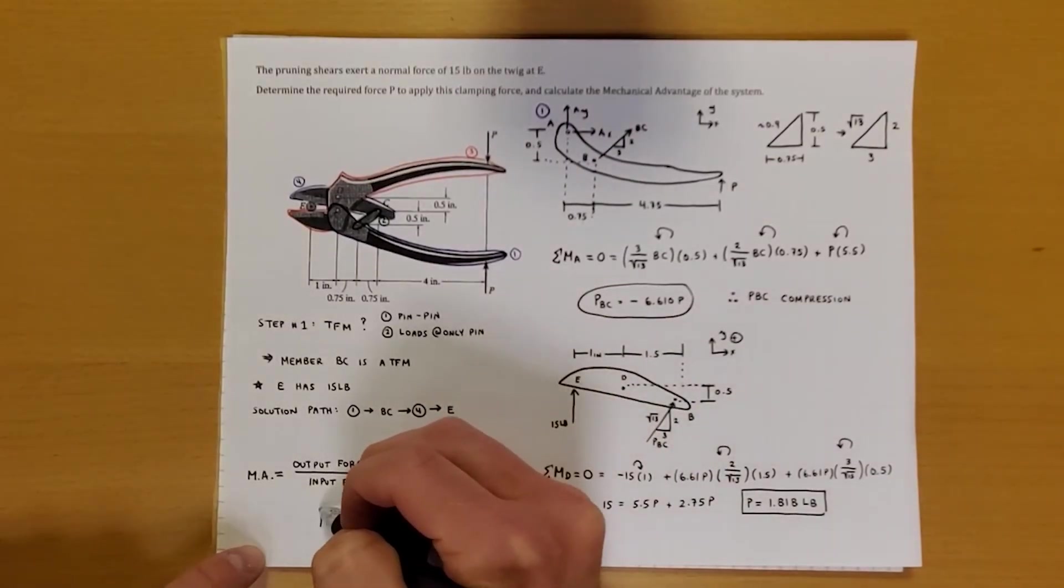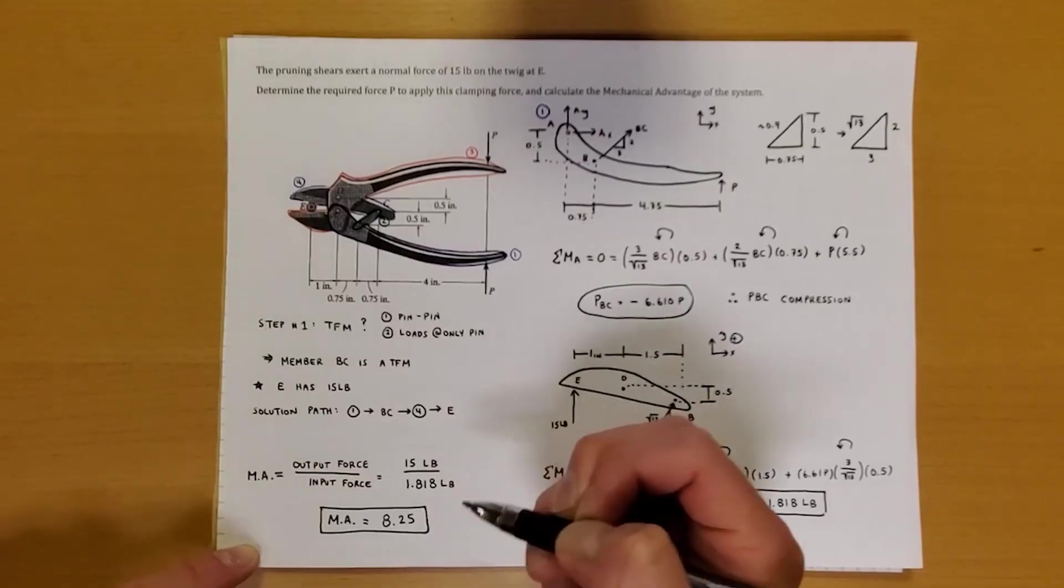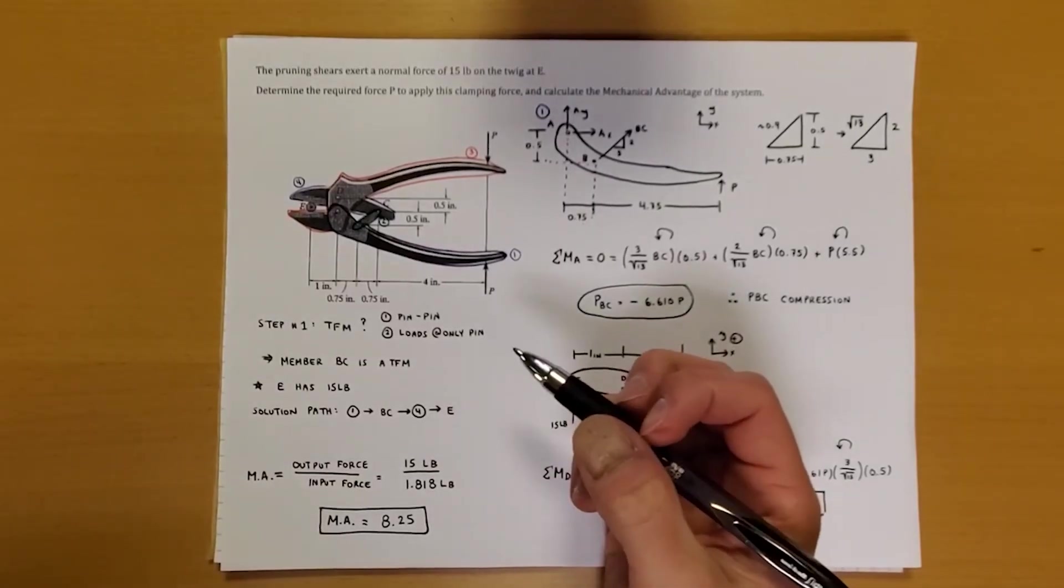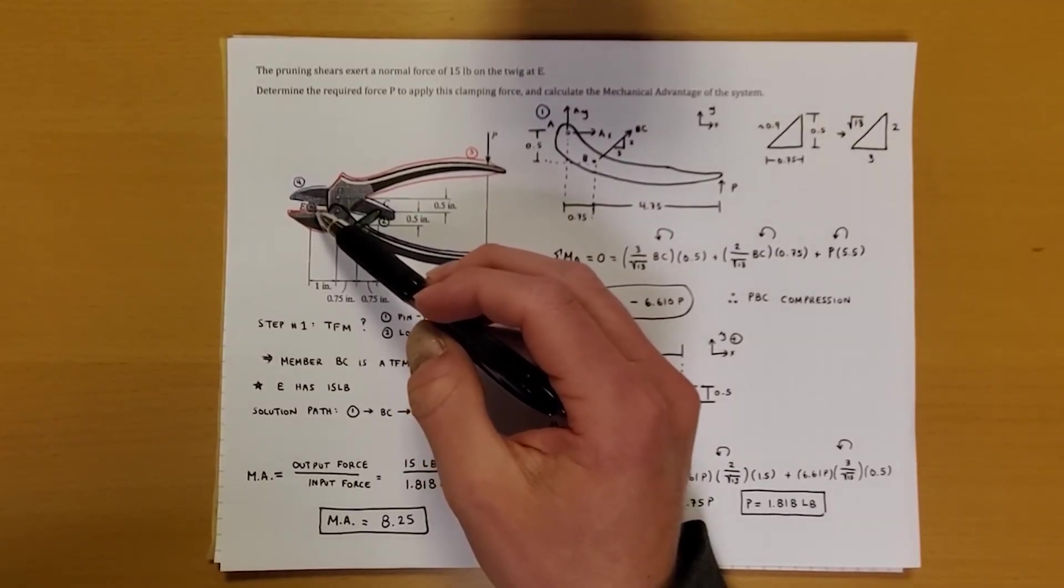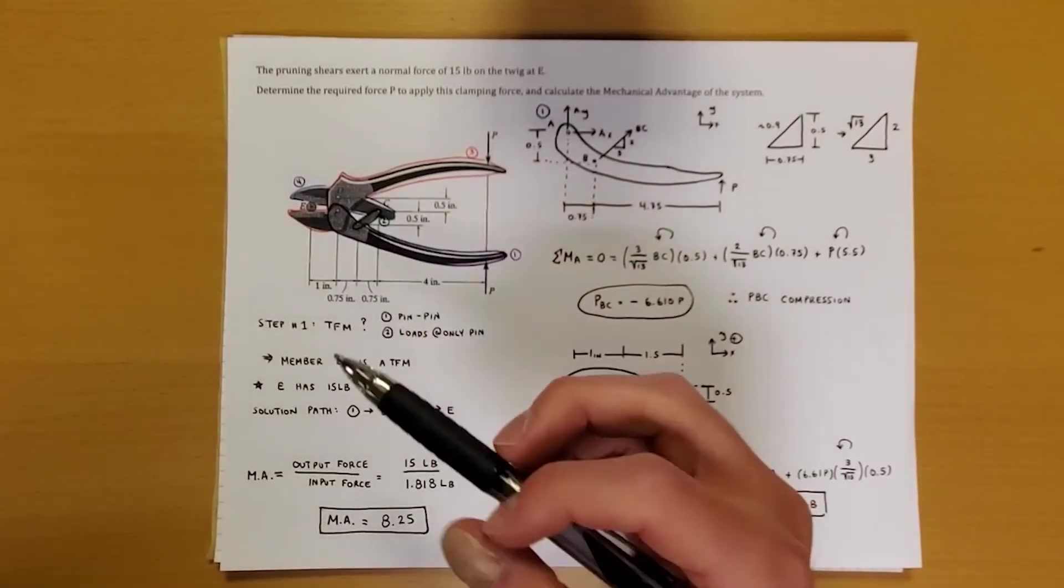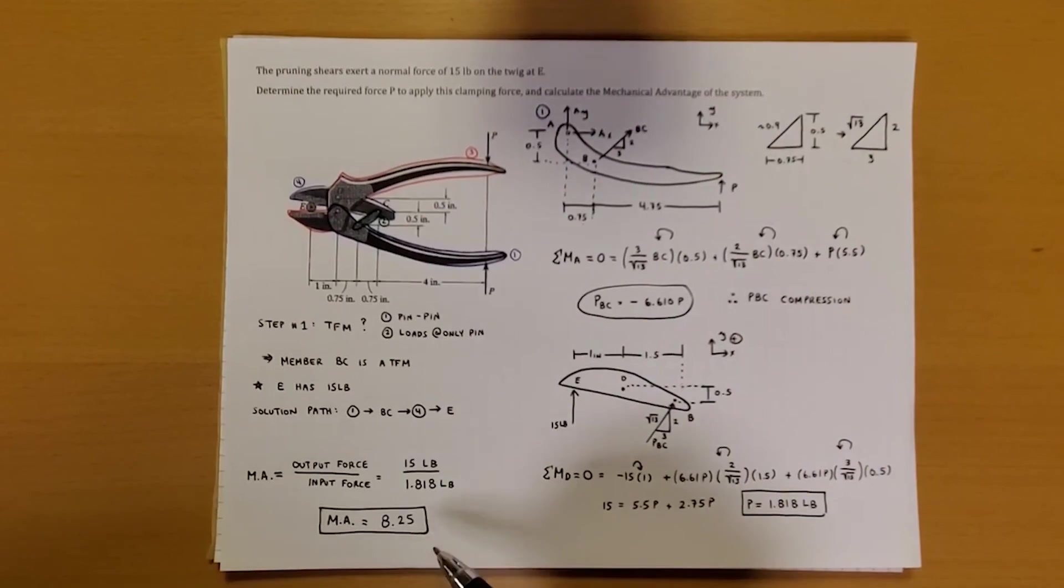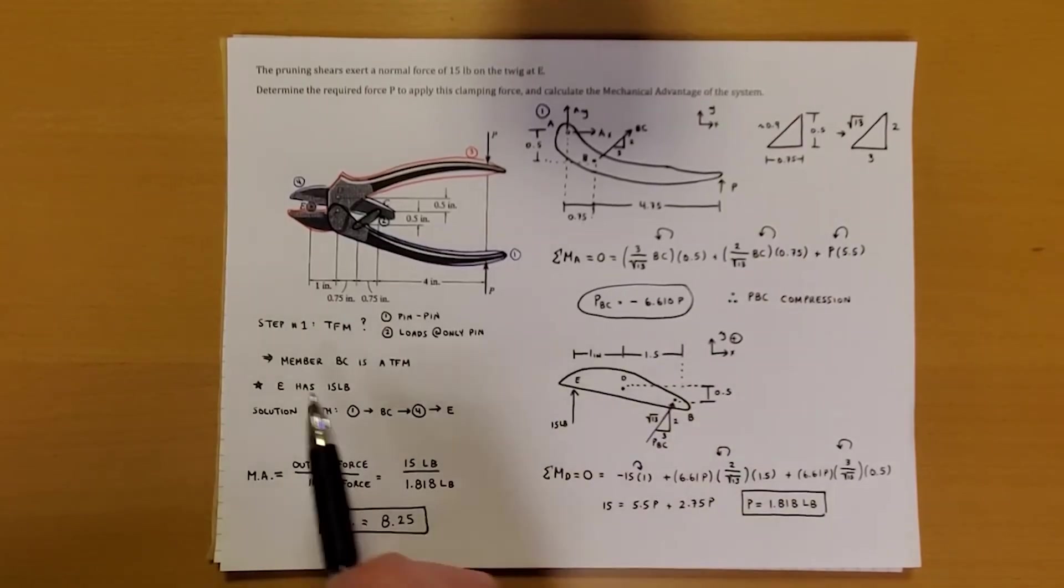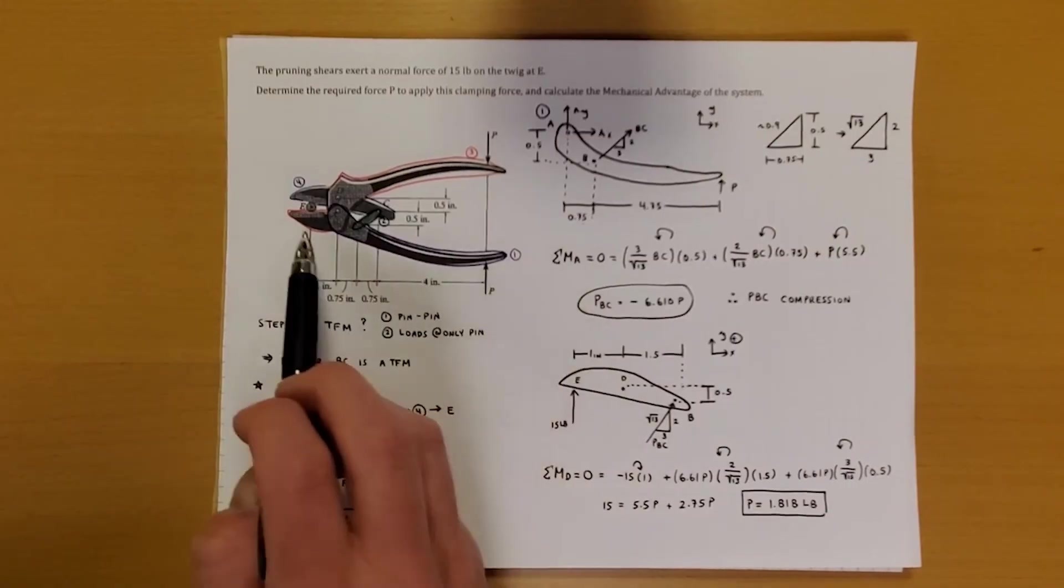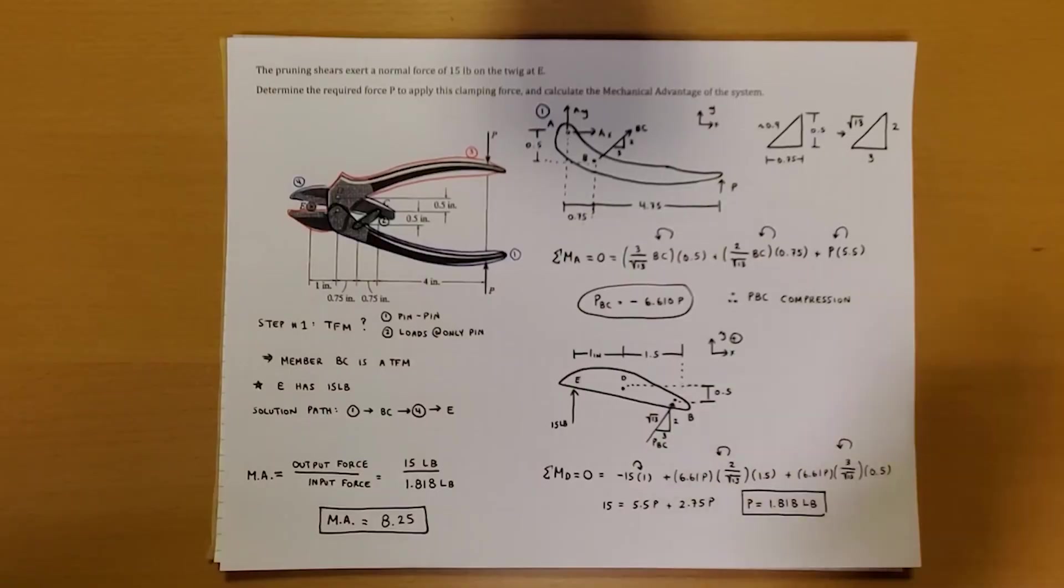So that's actually a pretty hefty mechanical advantage for such a small machine. But that's exactly why machines are very valuable, even when they're small like this. Because we know that you can't just chop through a twig like that on your own. But being able to provide 1.8 pounds, output 15, almost an order of magnitude increase in your output force. And there you go. That's how you do a machine question. Very similar to a frame, identifying the two force members, and kind of figuring out where you know the most things, and where you're trying to go to solve.